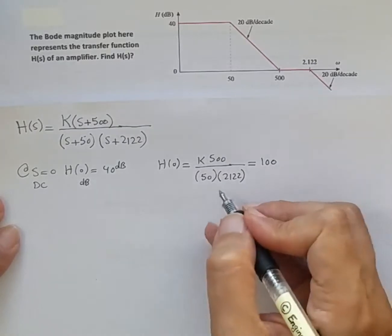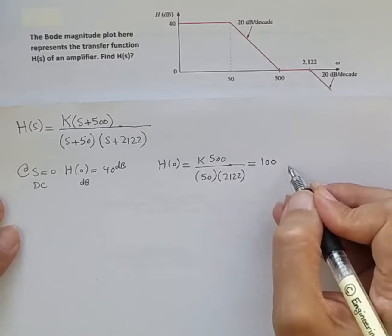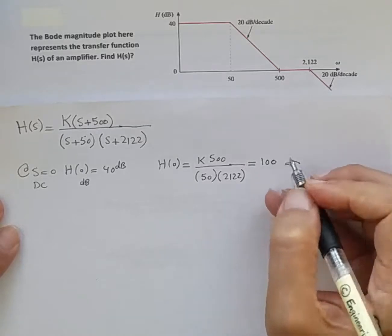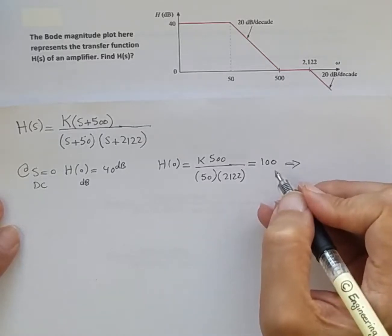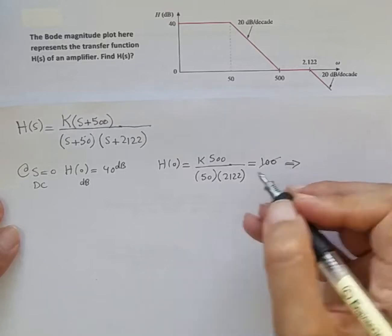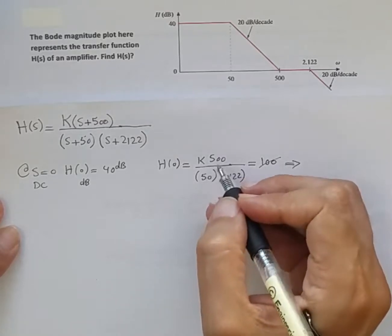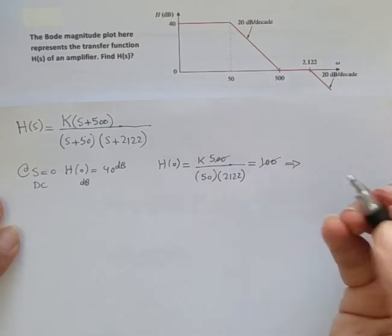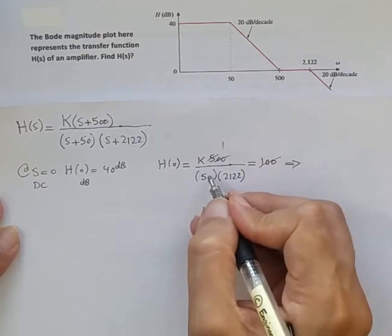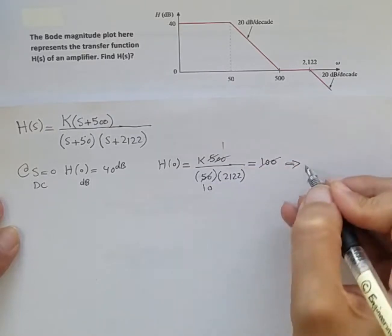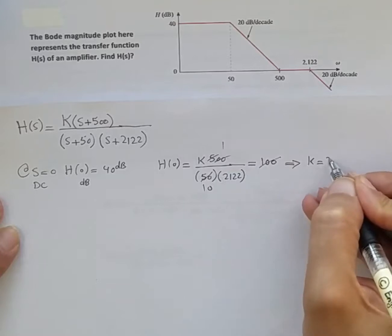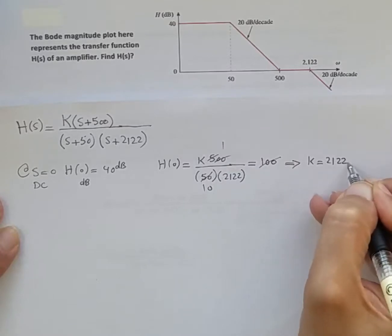We have 500 cancel out, and then 5 cancels out with this, so K should be 2122 times 20, which equals 100.